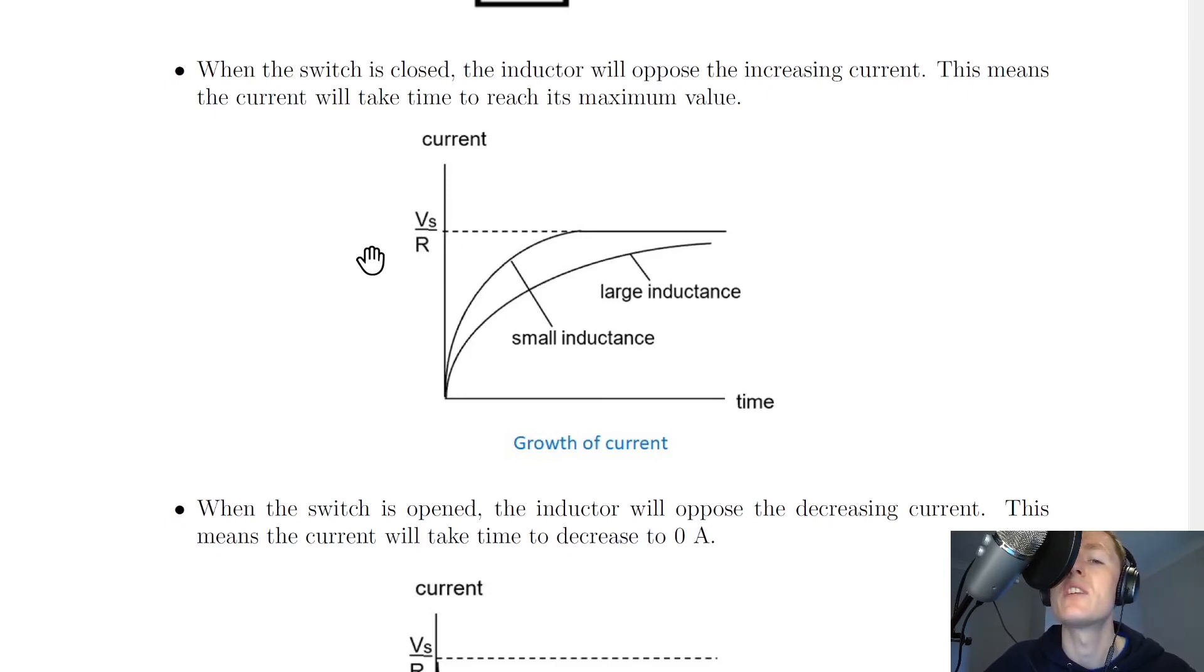So for an inductor with small inductance, it won't take very long to reach its maximum current, whereas for an inductor of larger inductance, it will take longer to reach a maximum current.